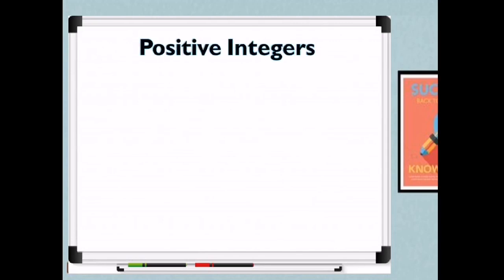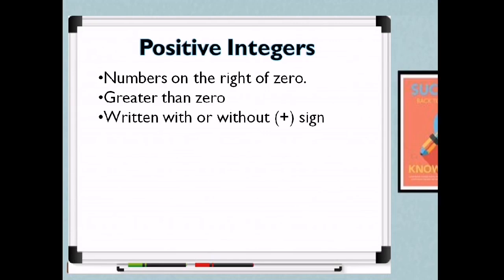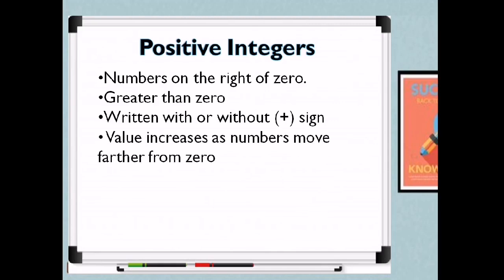Let's talk about positive integers. These are numbers on the right of 0, and these are numbers greater than 0. Written with or without the positive sign. Value increases as numbers move farther from 0. Example: 1, 2, 3, 4, and so on. So those are positive integers.